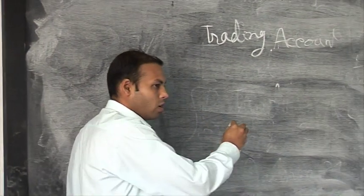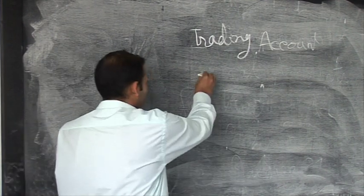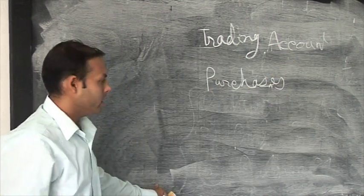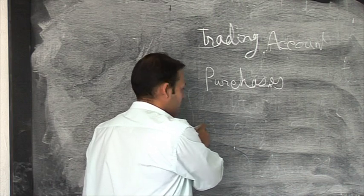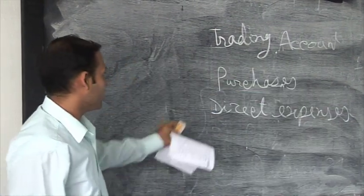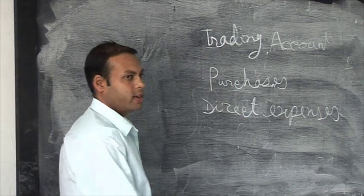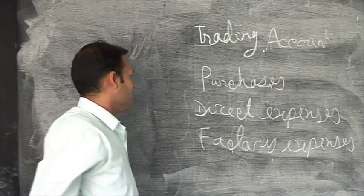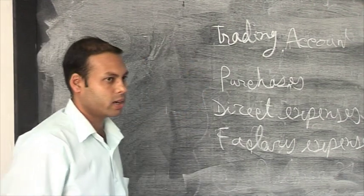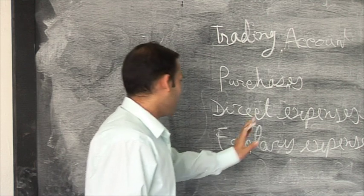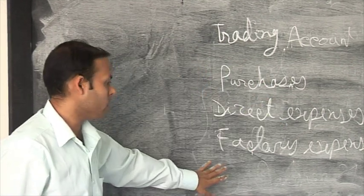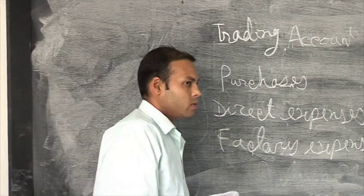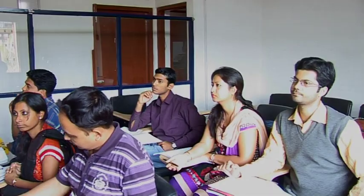Trading account will record all direct expenses — that means all purchases, expenses directly related to purchases, and factory or manufacturing expenses. These are the expenses recorded on the debit side of the trading account. On the credit side of the trading account, we record income — that is, sales and closing stock.